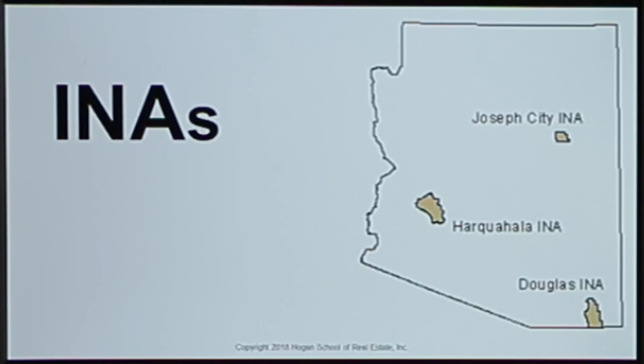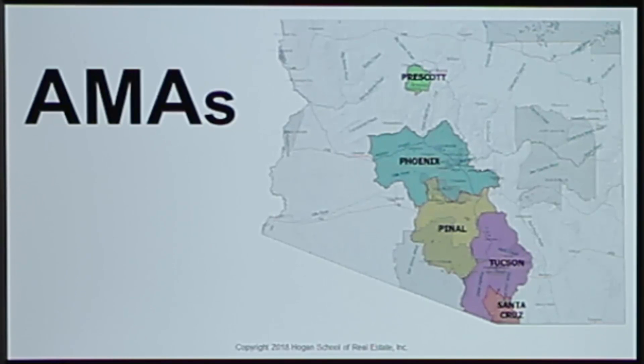The Active Management Areas, or AMAs, are along the major population corridors — starting down in Santa Cruz, coming up through Tucson, through Pinal County, and up into Maricopa County, all along I-19, I-10, and I-17, then skipping up above the Mogollon Rim to Prescott. These areas of high population obviously use a lot more groundwater, so groundwater is really actively managed and restricted in those particular areas.